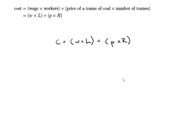So we're going to start by subtracting WL and just rearranging things. So we have P times R is equal to C minus W times L.